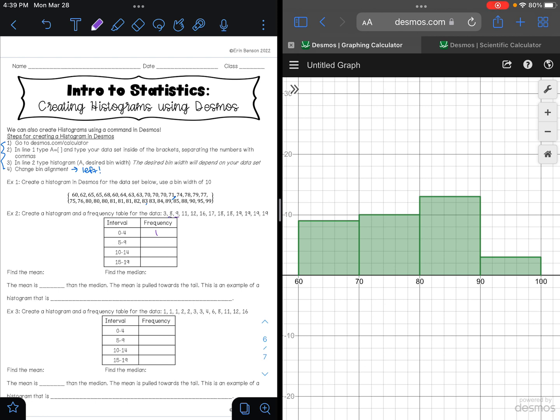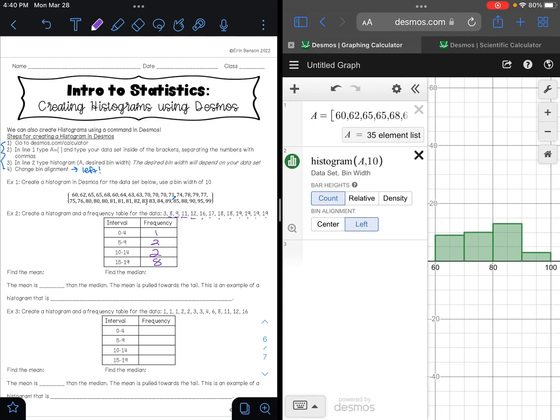Between 10 and 14 I have 1, 2. And between 15 and 19 I have 1, 2, 3, 4, 5, 6, 7, 8. So let's go ahead and type that into our list here.